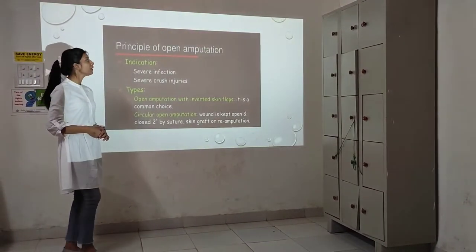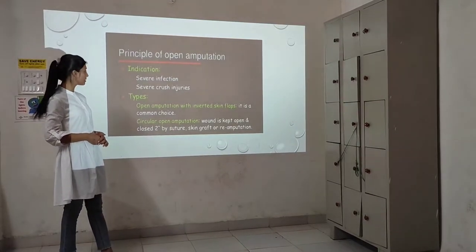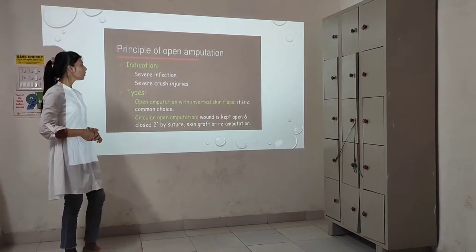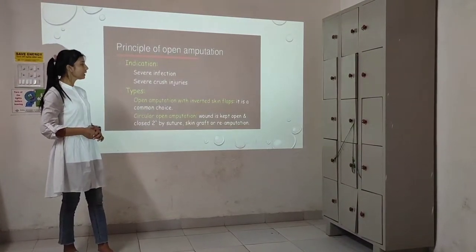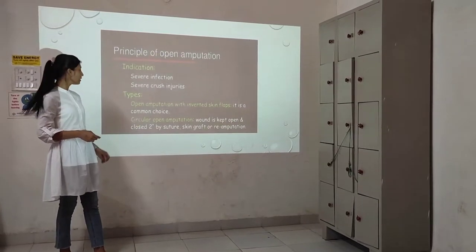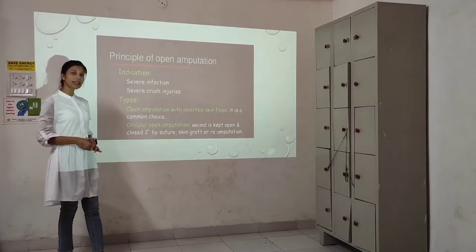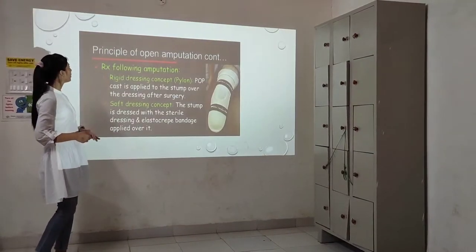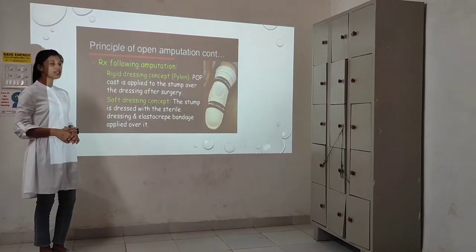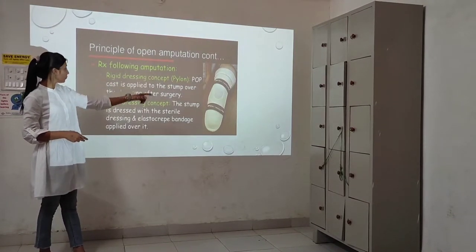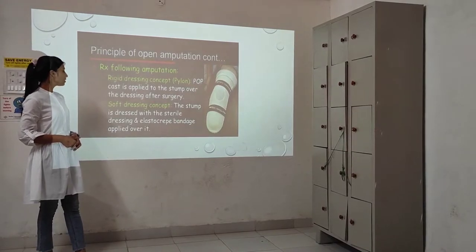The indications for open amputation include severe infections and severe crushed injuries. The types are: open amputation with inverted skin flap — which is a common choice — and circular open amputation where the flap is kept open and closed secondarily by sutures or skin graft. Principles following open amputation include the rigid dressing concept using a POP cast applied to the stump, and the soft dressing concept where the stump is dressed with sterile gauze and an elastocrepe bandage.